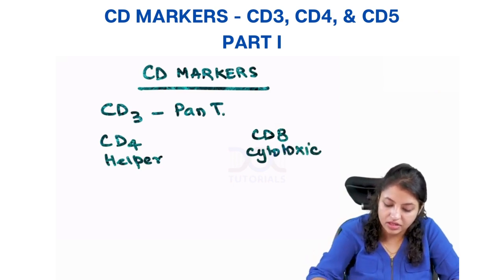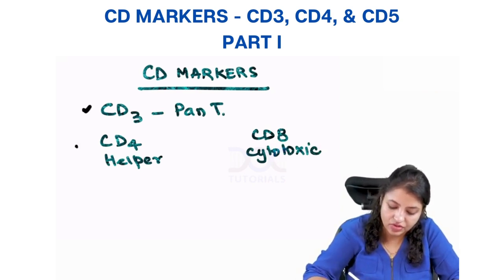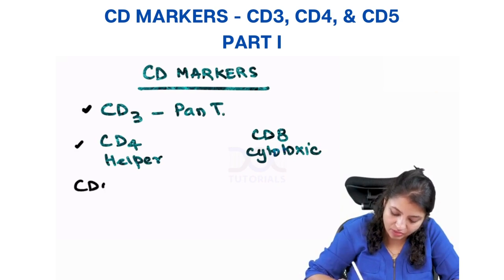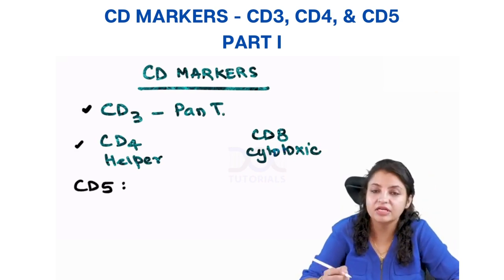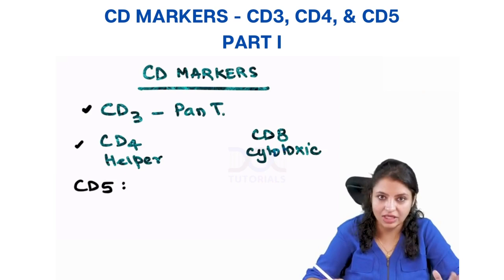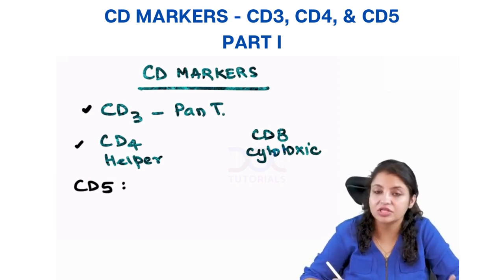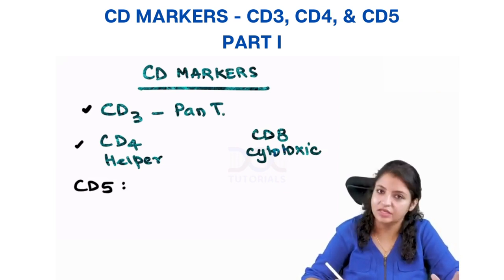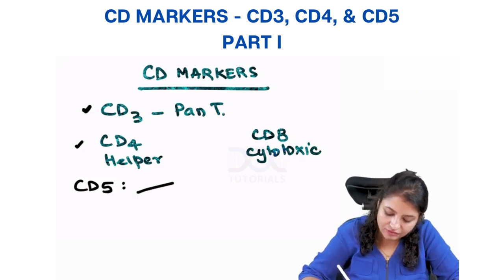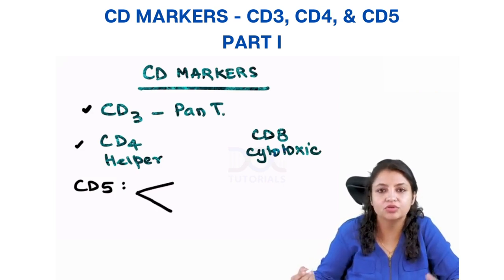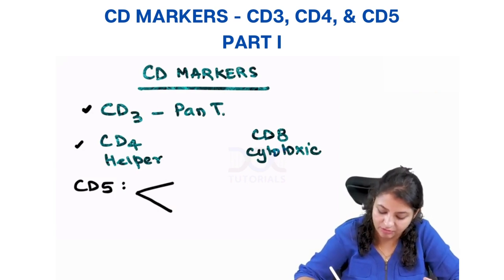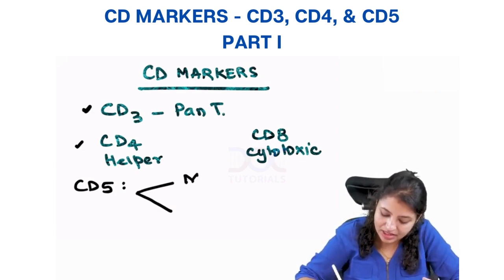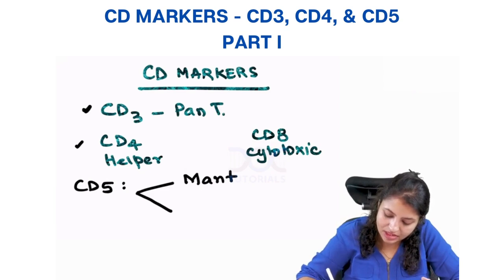CD5 is usually a T cell marker — it's present on T cells — but B cells can also express CD5. There are 2 lymphomas which are CD5 positive: number one is mantle cell lymphoma, and number two is small lymphocytic lymphoma.